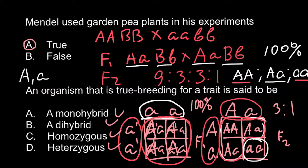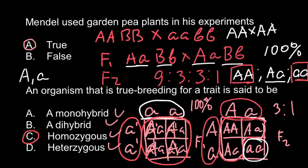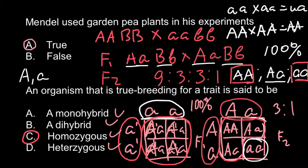Now we are ready to answer our question: an organism that is true breeding for a trait is said to be — and the correct answer is answer C: homozygous. It must be either homozygous dominant or homozygous recessive. When we cross homozygous dominant with homozygous dominant, 100% of the progeny would also be 'capital A capital A'. When we cross homozygous recessive with homozygous recessive, 100% would also be homozygous recessive.